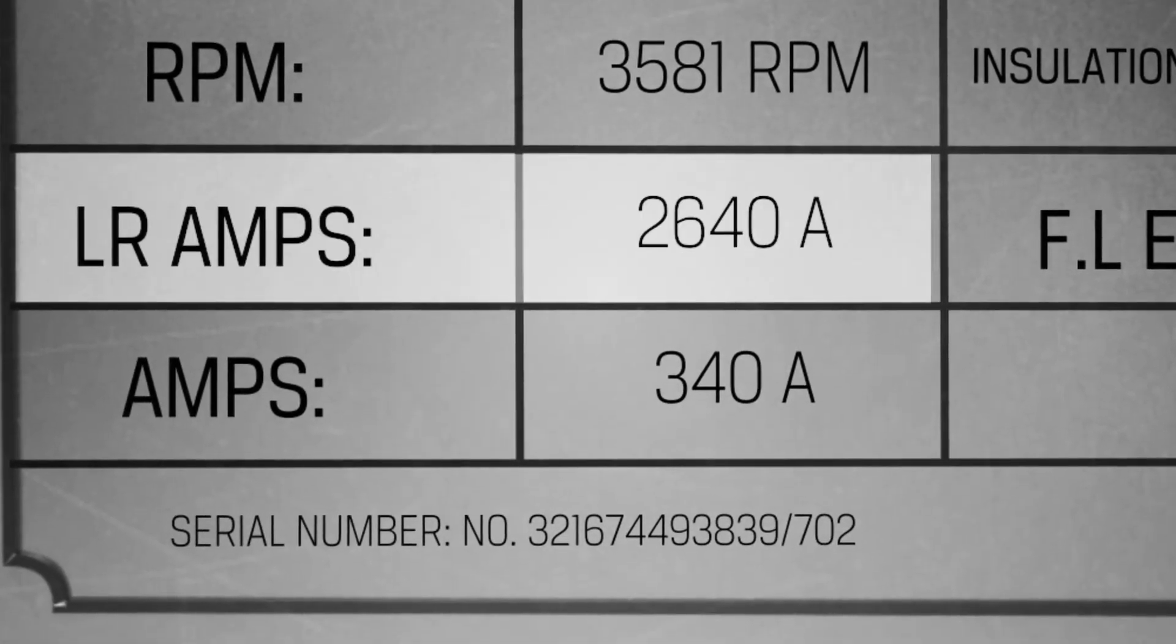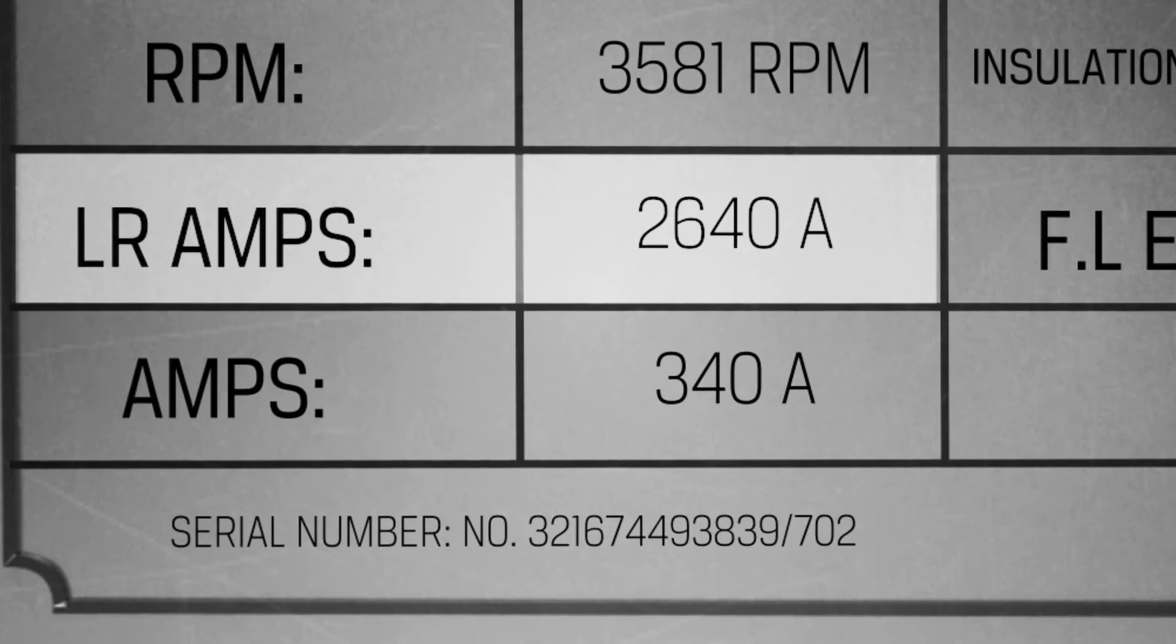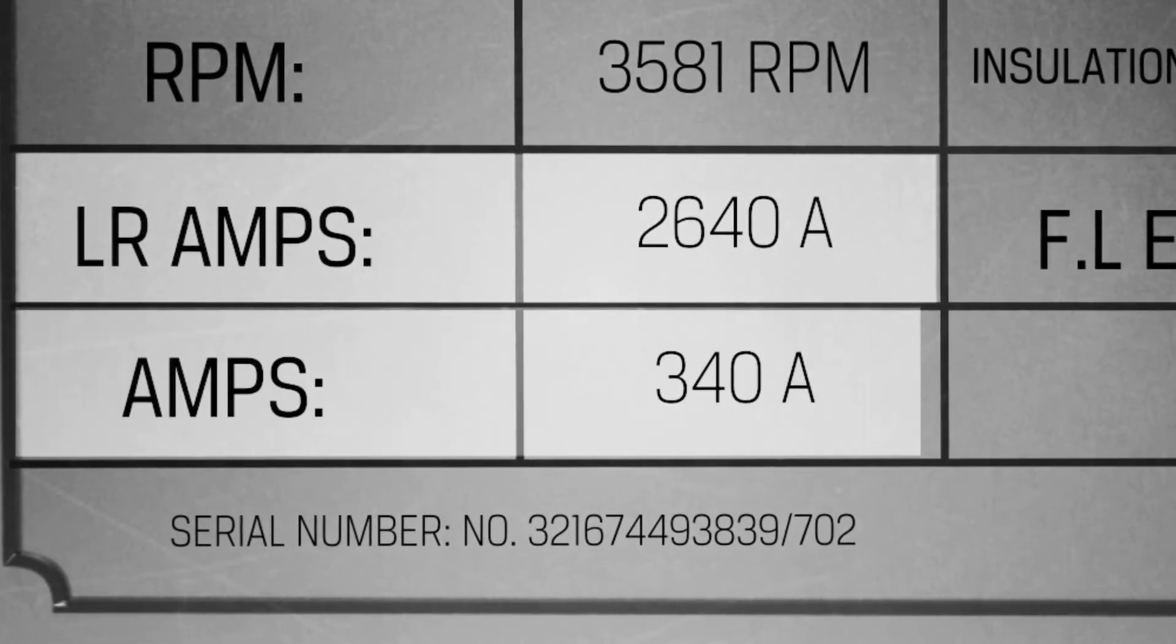Locked rotor amps tells you the current draw when the motor is energized with full voltage, but not rotating. Comparing this number to the amps rating will determine the potential surge severity during startups or jams.